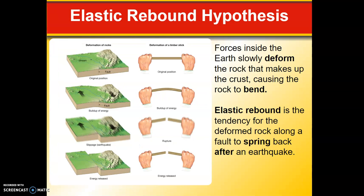Here we can see the forces inside the earth slowly deforming the rock making up the crust, causing the rock to bend. The elastic rebound is that tendency for the deformed rock along the fault lines to spring back after an earthquake.